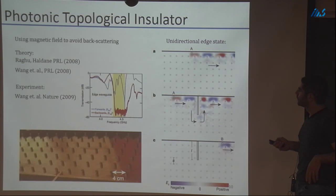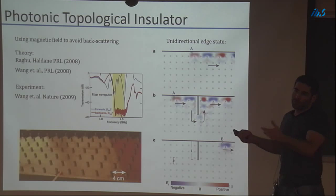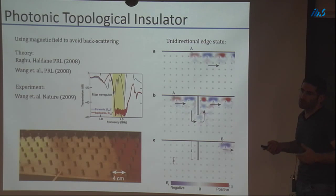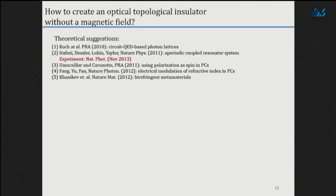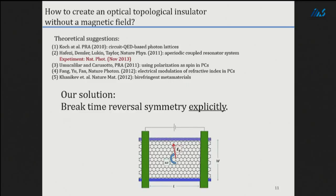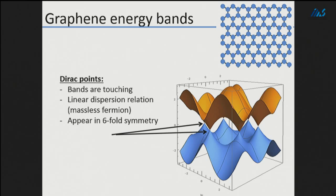Several suggestions were made on how to implement these ideas at optical frequencies, one of which was also demonstrated experimentally — the first demonstration was in our group. Our solution is to break time reversal symmetry explicitly. In paraxial approximation, time reversal means Z symmetry. We borrow the idea of a graphene sheet modulated in time. Before discussing how to modulate the graphene sheet, let's first talk about graphene itself.